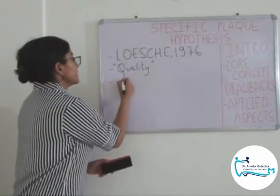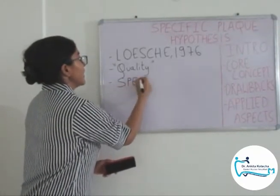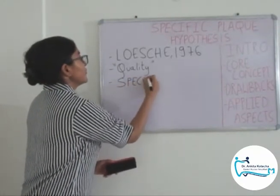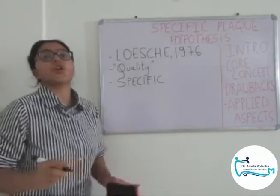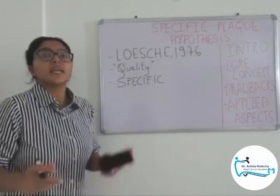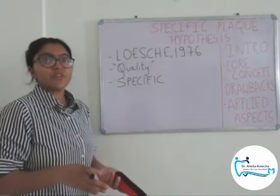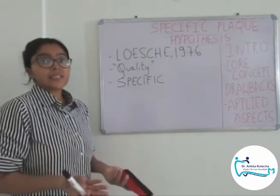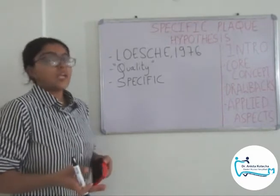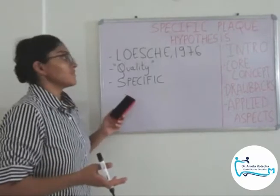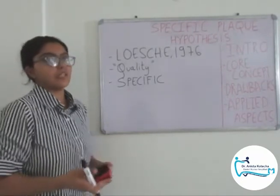It says certain specific microorganisms present in the plaque contribute to the pathogenicity of the plaque and cause periodontal disease. These specific microorganisms, with the help of their virulence factors, release noxious products and cause the disease. These specific microorganisms were assumed to be exogenous in nature.